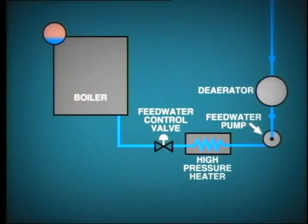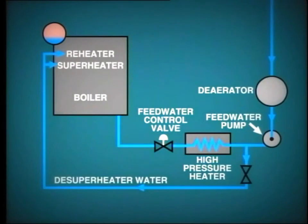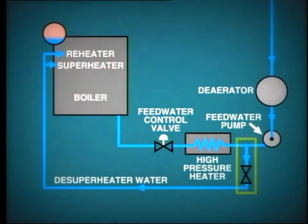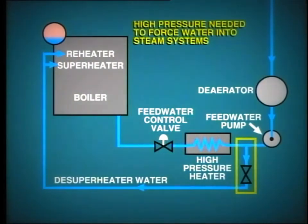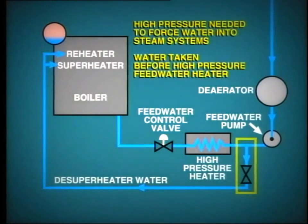As well as providing feedwater for the boiler, the feedwater system provides water for the desuperheaters on the main steam and reheat systems. Desuperheating water is tapped off the feedwater system at a point fairly close to the feedwater pump. A sufficiently high pressure must be available in order to force the desuperheating water into the steam systems. The temperature of the water should be such as to provide cooling action; therefore, it should be taken before feedwater passes through the high pressure feedwater heater.